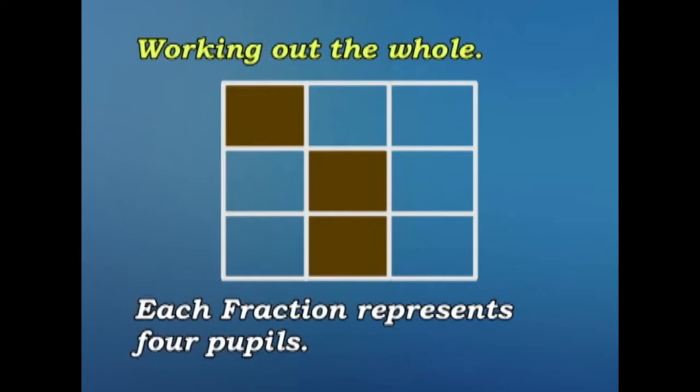Now if every fraction represents 4 pupils, we multiply 4 by 3. 1, 2, 3. And 3 fours are 12. So the colored blocks represent 12 pupils.